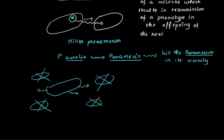When they looked into it in more detail, they found that the paramecium secreting the paramecin — let's say this is the nucleus — it had certain particles inside its cytoplasm. These particles were basically secreting the toxin which was killing the paramecium in its vicinity. When they further examined these particles, they found out that these particles are nothing but bacteria residing inside the paramecium as endosymbionts.